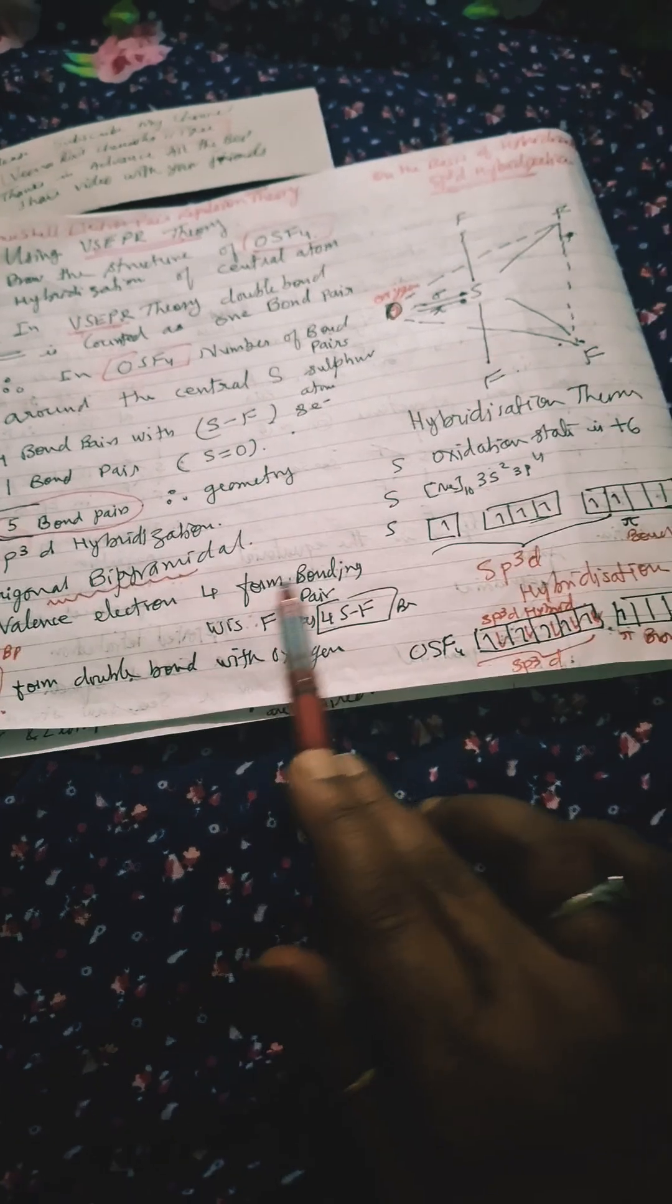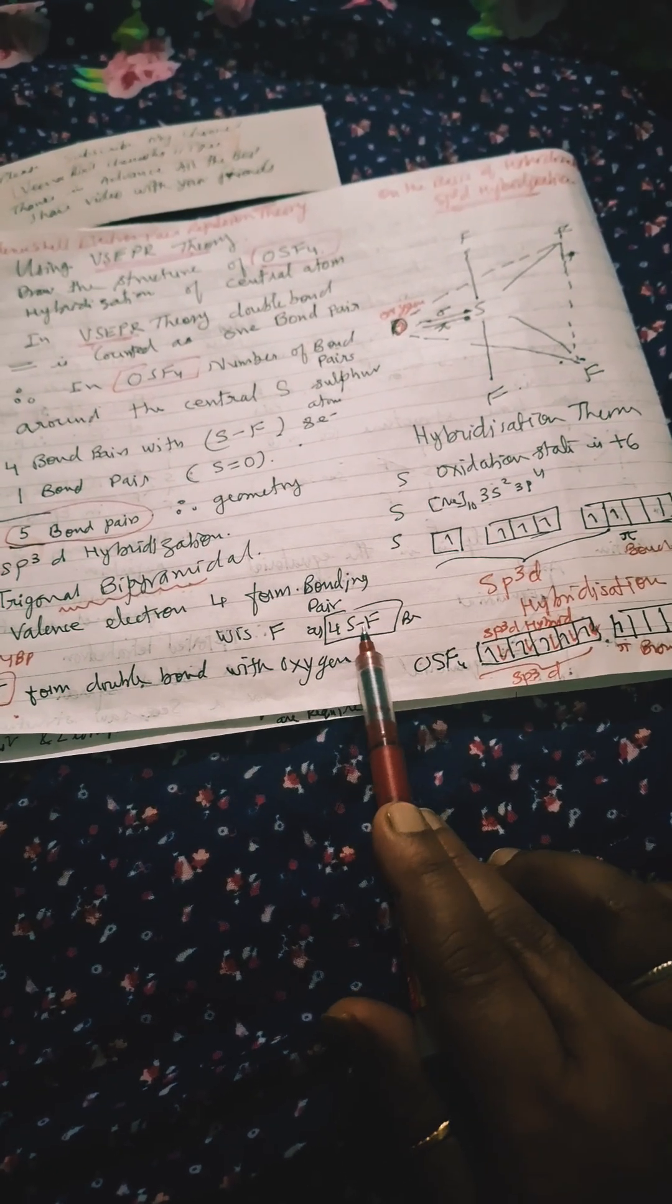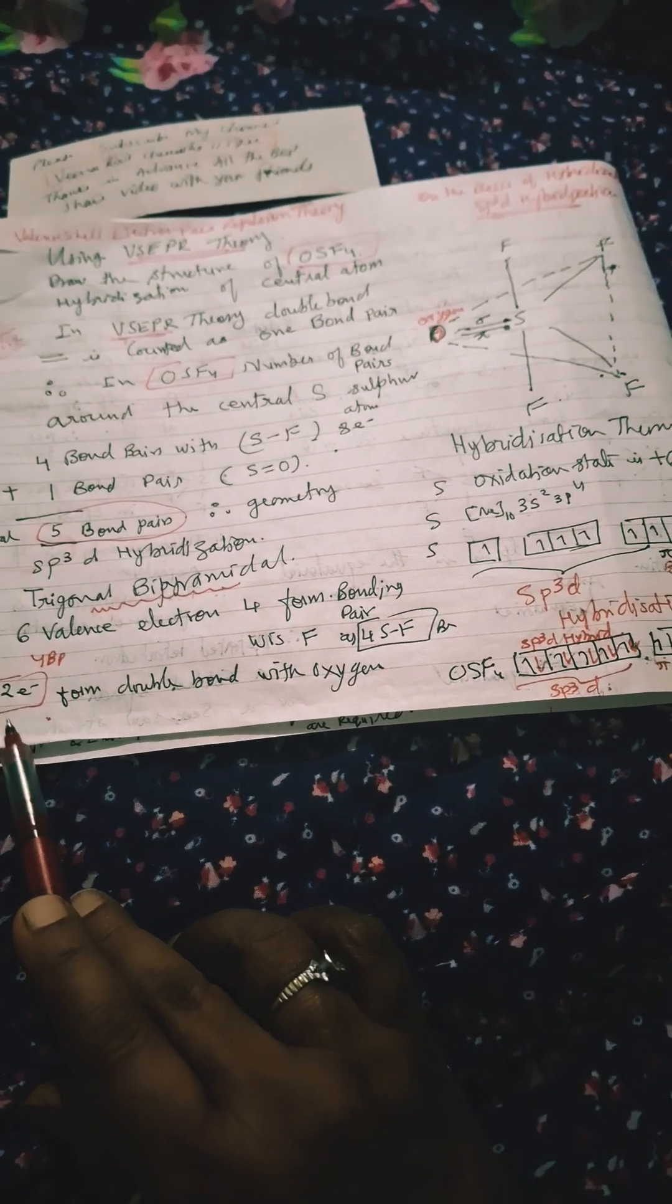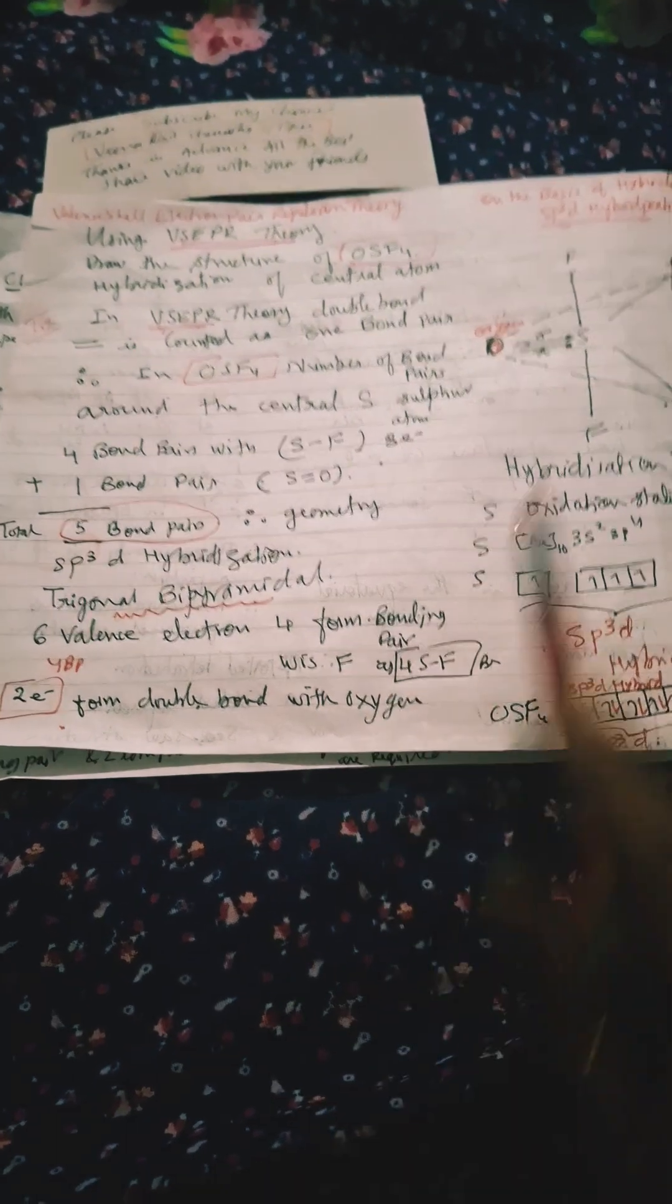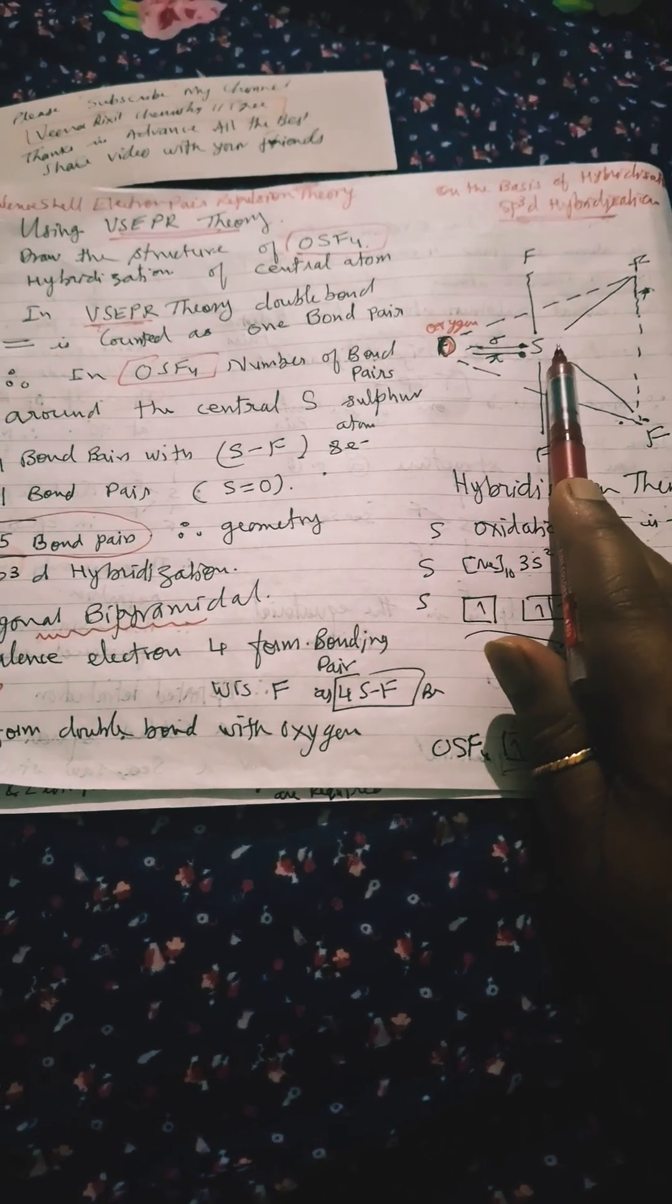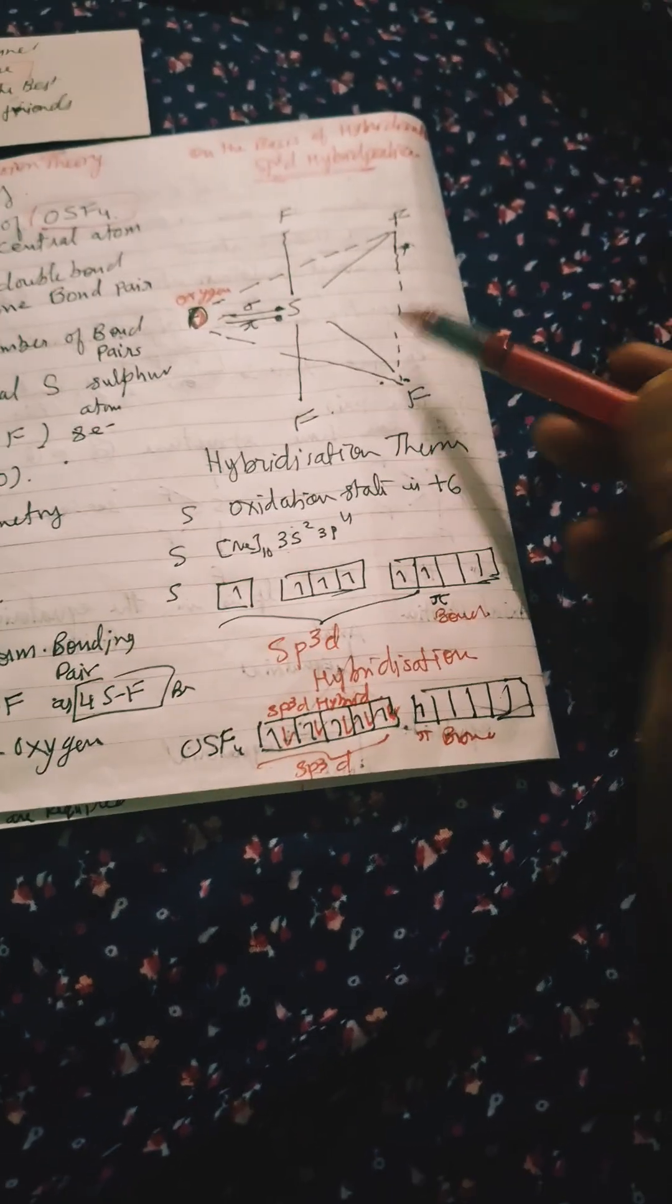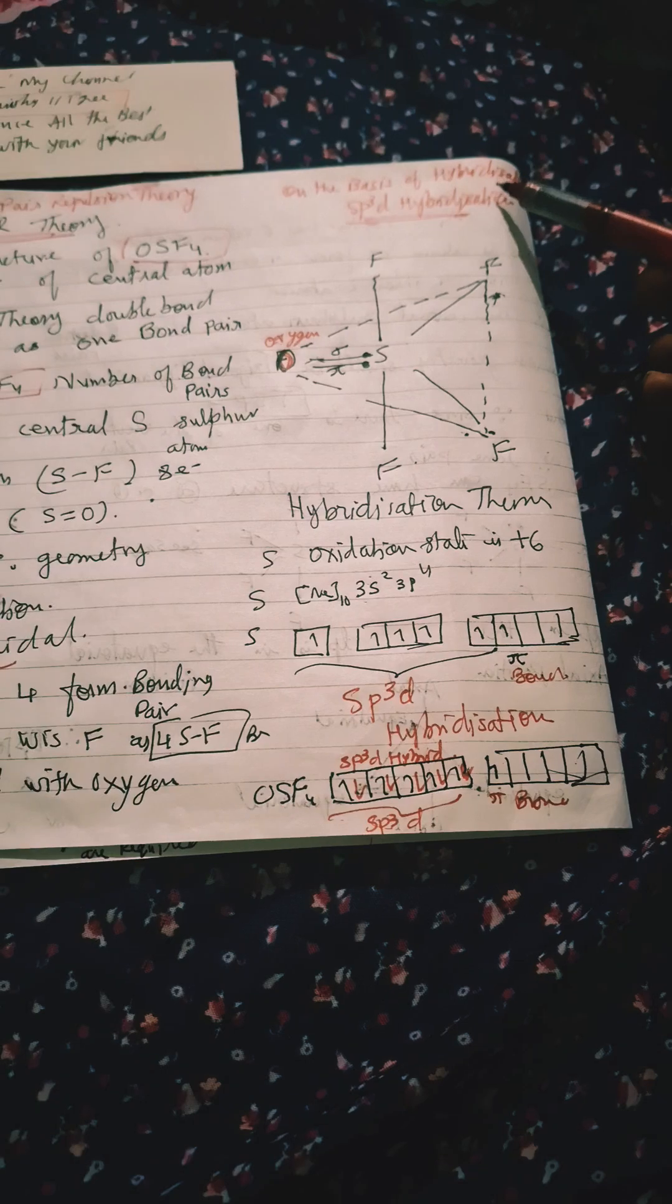Four electrons from bonds with four SF bonds will share electrons with fluorine atoms, and two electrons are involved when double bonded between sulfur and oxygen. This is the trigonal bipyramidal geometry. We can explain this in terms of hybridization also.